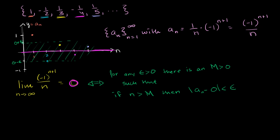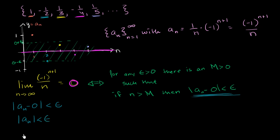So how do we prove it? Let's think about what needs to happen. What needs to be true for the absolute value of A sub N minus 0 to be less than epsilon? Well, this is another way of saying the absolute value of A sub N has to be less than epsilon. And A sub N is just negative 1 to the n plus 1 over n. Because that numerator just swaps between a negative and positive version of 1 over n, if you take the absolute value it's always going to be positive.